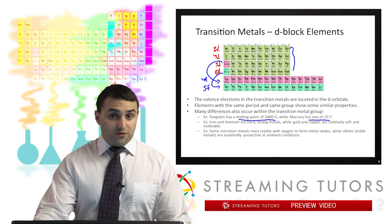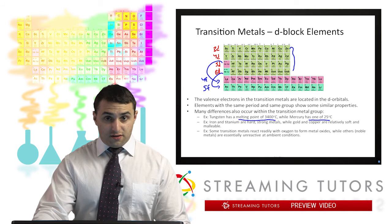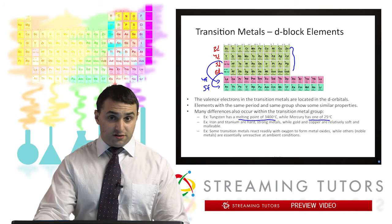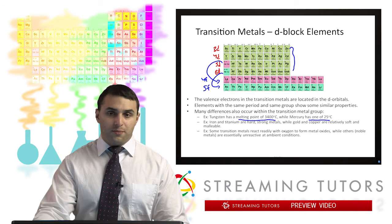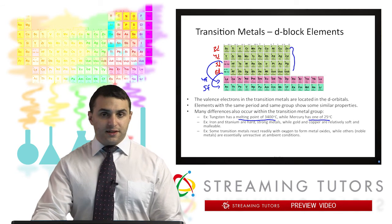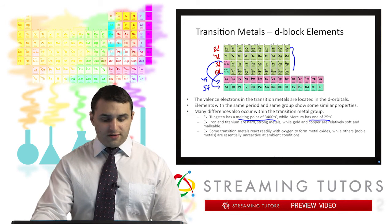Other properties deal with the strength and the ductility of the materials. Iron and titanium are hard and strong, whereas something like gold and copper are relatively soft and ductile and malleable because we can form into coins, wires, what have you.